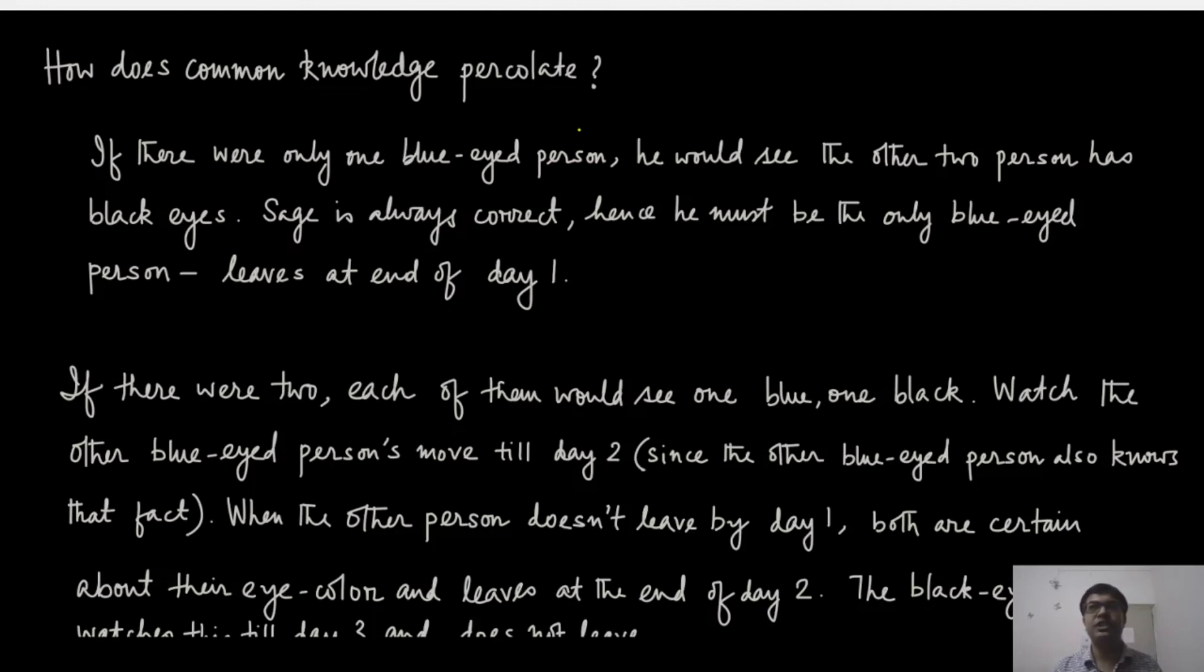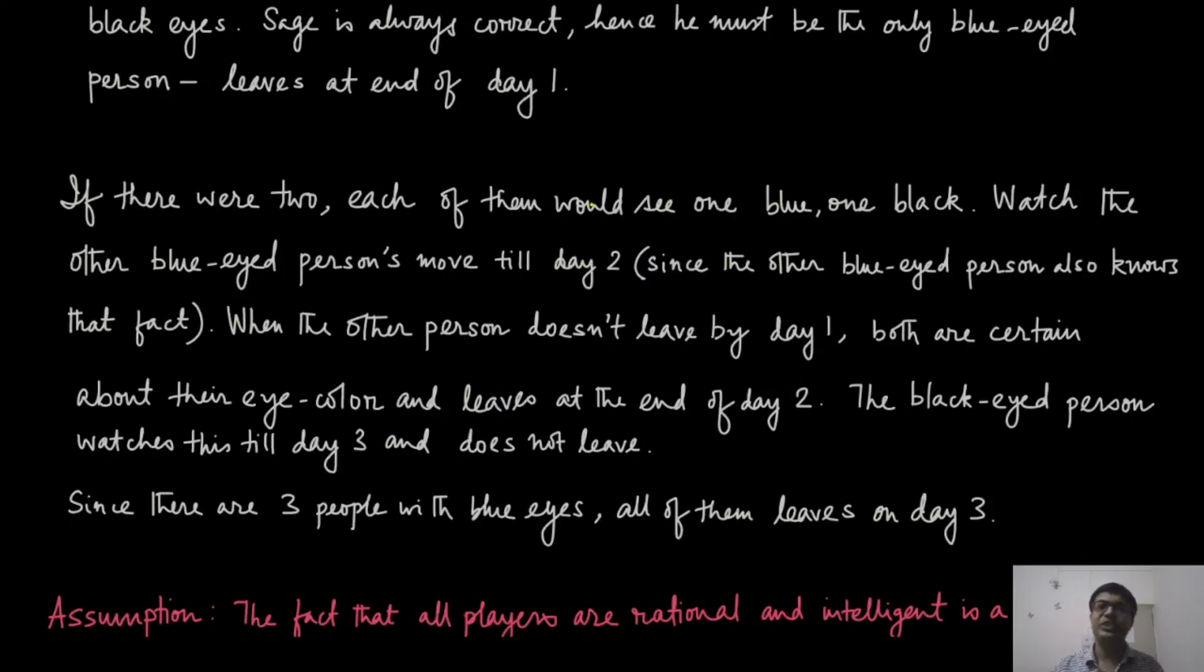The black-eyed person initially saw both blue-eyed people, and on day three when he sees that both these people are gone, he understands that his eye color was black and he will not leave. That's the implication of common knowledge. With this argument, you can clearly see what will happen for three people in the original example. All three people will leave the island on day three, because on day three all of them will appear again and then deduce that all three people had blue eyes.